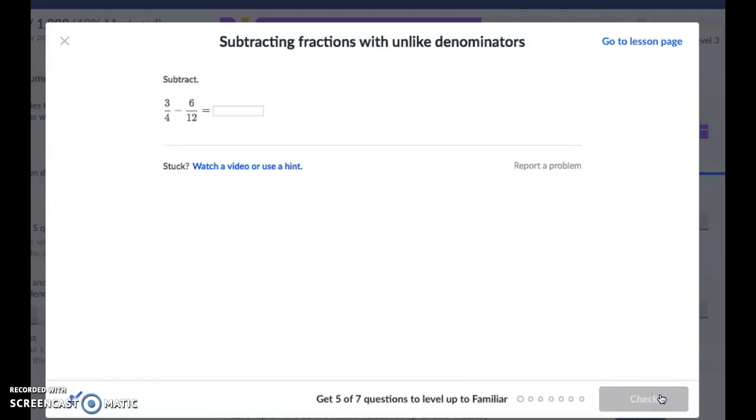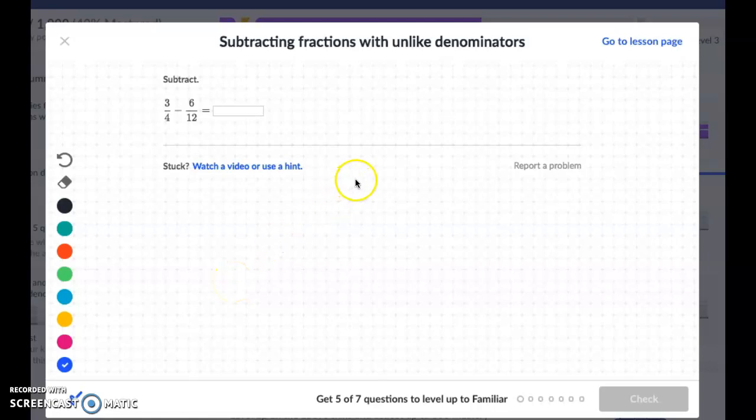Three fourths take away six twelfths. Now if you watched the last video, we're going to do the exact same thing that we did before, it's just subtracting instead of addition. So three fourths take away six twelfths, and again I'm going to look for that common denominator.